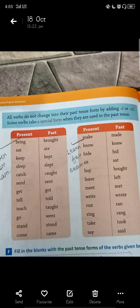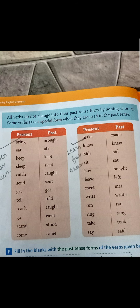In the past tense, some verbs take special forms — not just D or ED. For example: eat–ate, keep–kept, sleep–slept, catch–caught, send–sent, get–got, tell–told, teach–taught, go–went, stand–stood, come–came.